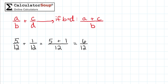This fraction can be reduced, so let's simplify it. The greatest common factor of 6 and 12 is 6, so divide both the numerator and denominator by 6. 6 divided by 6 is 1, and 12 divided by 6 is 2, so our simplified answer is 1 half.